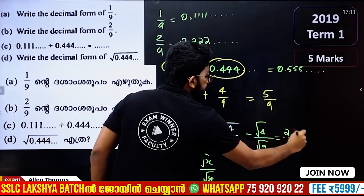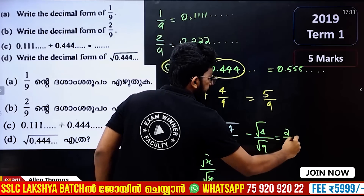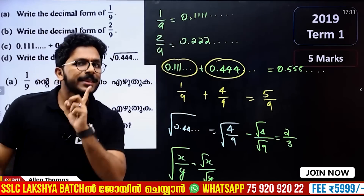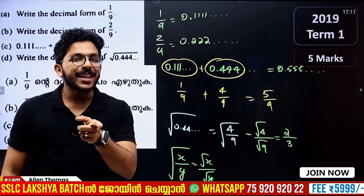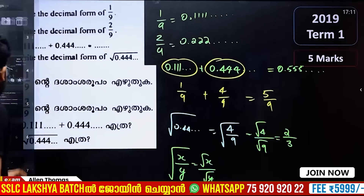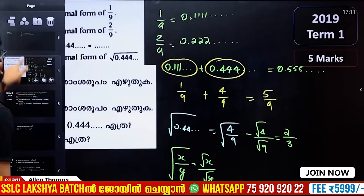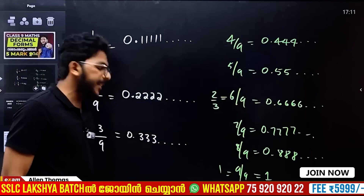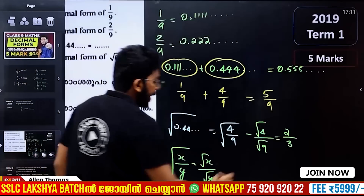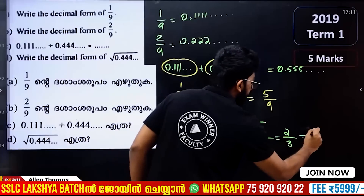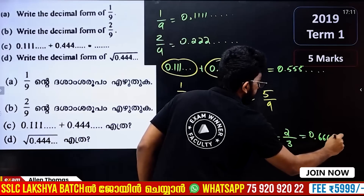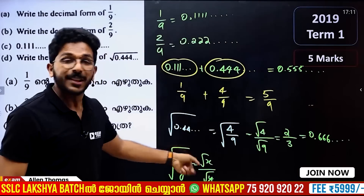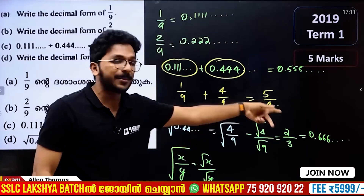Root 4 is 2, root 9 is 3, so the answer is 2 by 3. Now, 2 by 3 equals 0.6666... and the square root of 0.4444 is 0.6666.